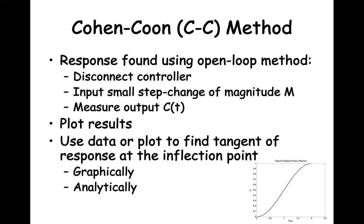If we plan to use the Cohen-Kuhl method to collect information to find the values of Kp, tau i, and tau d, we need to disconnect the controller. This means there will not be any processing adjustment made when there is a change to one of the inputs. With the controller disconnected, we will make a small step change of magnitude M to one of the inputs. Then we measure the process output C(t) and plot the results. Hopefully you will get the S-shaped response shown in the previous slide, and we will use the output information to find values to calculate recommended values for Kp, tau i, and tau d.